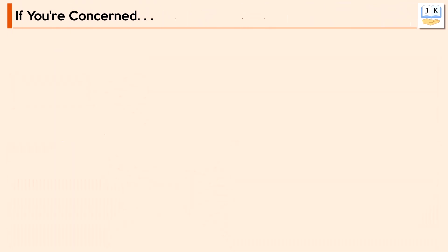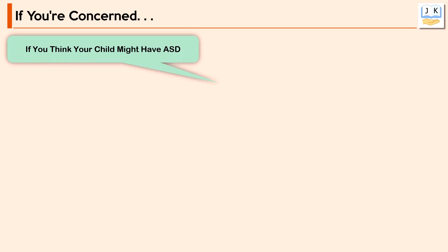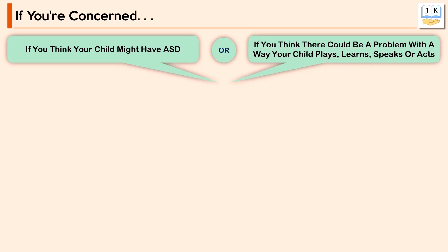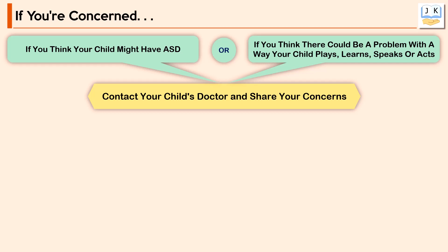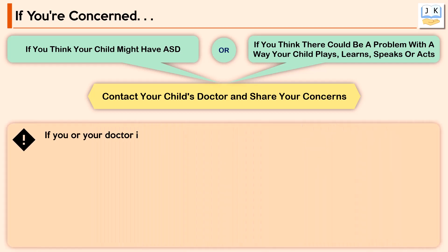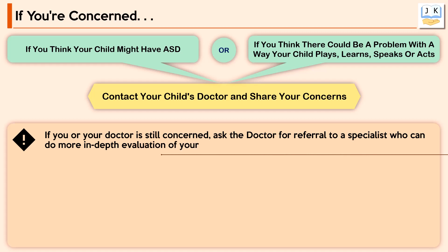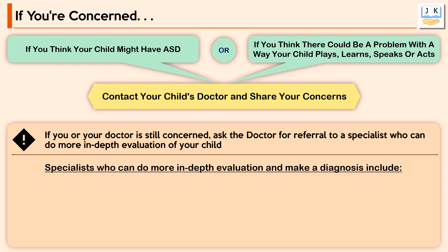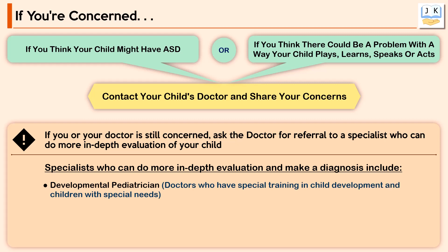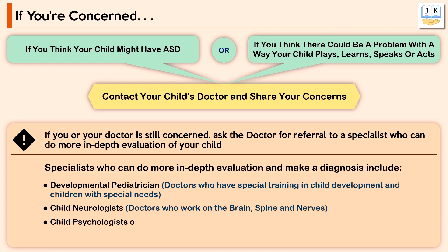If you think your child might have ASD, or you think there could be a problem with the way your child plays, learns, speaks, or acts, contact your child's doctor and share your concerns. If you or your doctor is still concerned, ask for a referral to a specialist. Specialists who can conduct in-depth evaluation and make a diagnosis include developmental pediatricians, child neurologists, and child psychologists or psychiatrists.